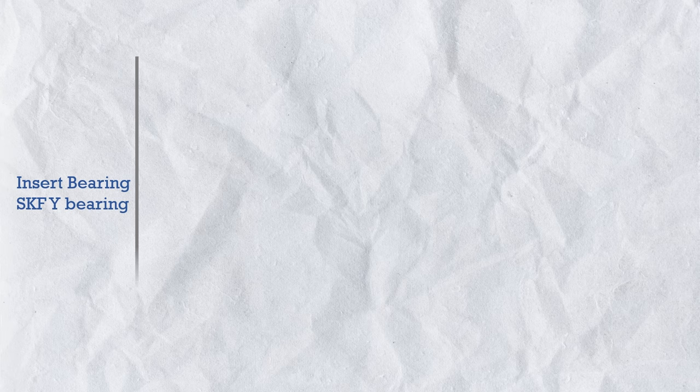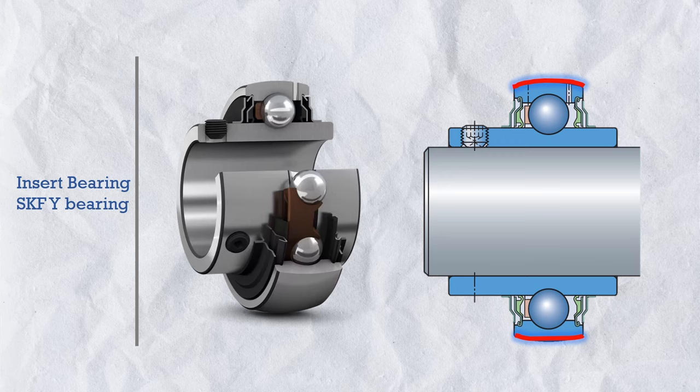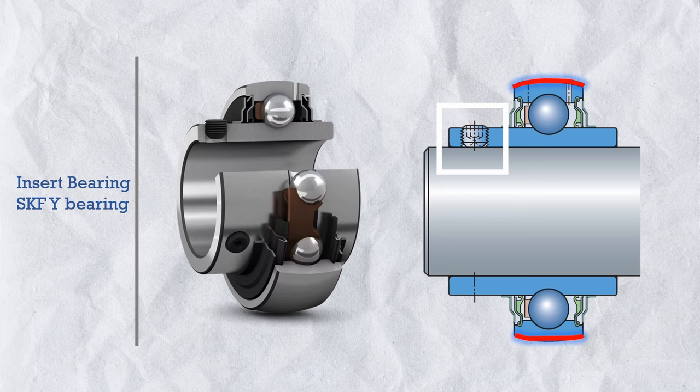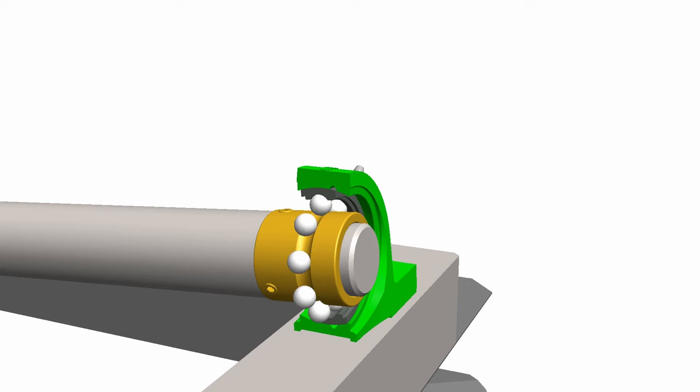Now let's look at each misalignment bearing in detail. The first is the insert bearing — basically a deep groove ball bearing with a convex outer surface, and in most cases an extended inner ring with a specific locking mechanism like a set screw, enabling quick and easy mounting on the shaft without requiring interference fit. The main feature is that it can accommodate initial angular misalignment within the pillow block housing. Keep in mind: this bearing is for initial static misalignment only — it is not a self-aligning bearing.